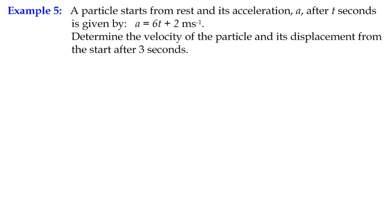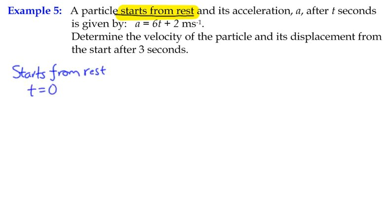When you're reading text like this, I can't emphasise enough just how much information there is in certain words. You're not always given values like t equals 5 and v equals 0 — sometimes you've got to interpret words. A particle starting from rest is loaded with information. If it starts from rest, then at t equals zero, the displacement is zero, the velocity is zero, and the acceleration is also zero. So from the phrase 'starts from rest' we can gather some valuable information.